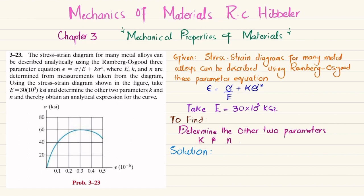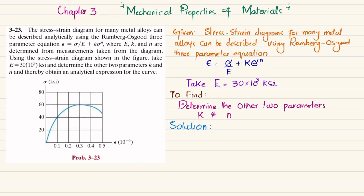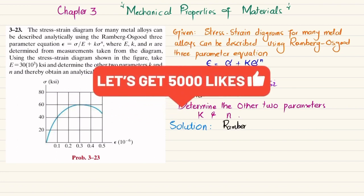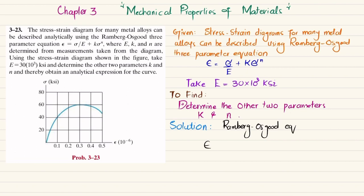As per the Ramberg-Osgood equation, we have: strain = stress divided by modulus of elasticity, plus K times stress to the power N. Let's call this equation number 1.